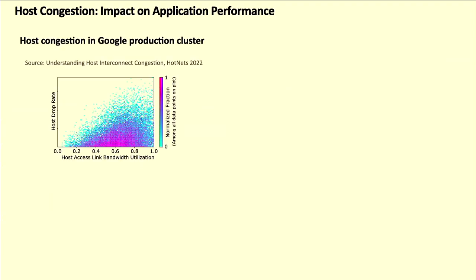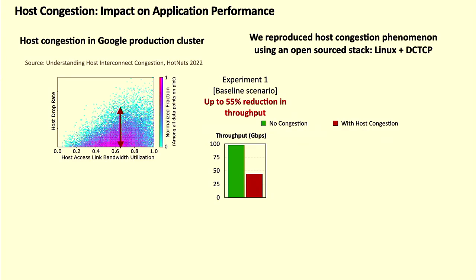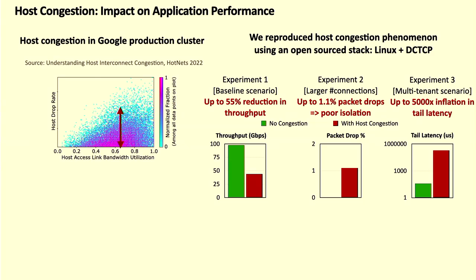A recent HotNets study presented evidence of host congestion in Google's large-scale production clusters. The figure shows a scatter plot of link access bandwidth utilization on the x-axis and measured packet drop rates on the y-axis at the hosts. Even after using state-of-the-art congestion control protocols and user-space network stacks, servers in Google's production clusters observed large numbers of packet drops, even when the access-link bandwidth was far from saturation. The first contribution of our paper is to reproduce this host congestion phenomenon using an open-source Linux network stack and DC-TCP, observing up to 55% throughput degradation and several orders of magnitude of tail latency inflation.